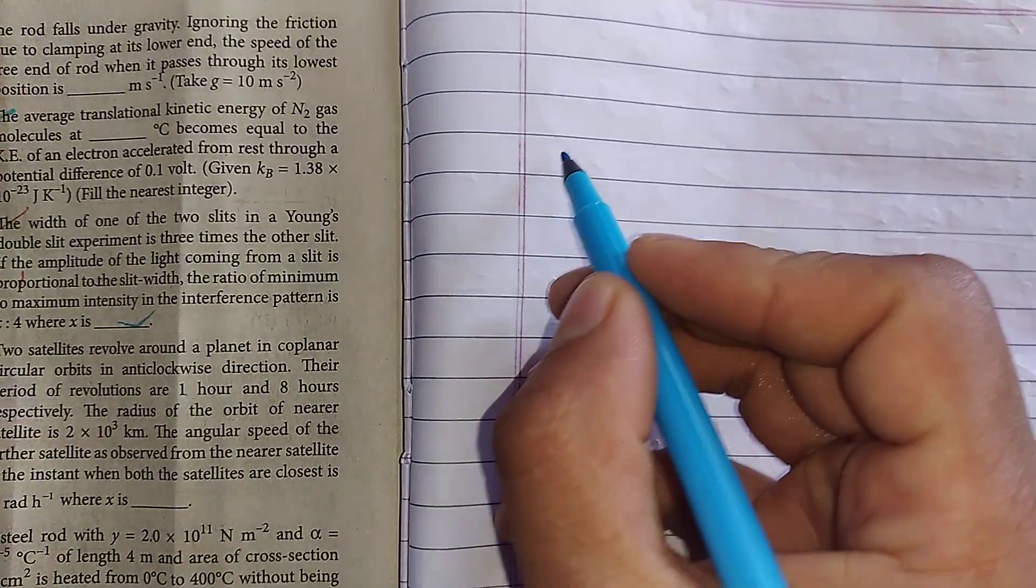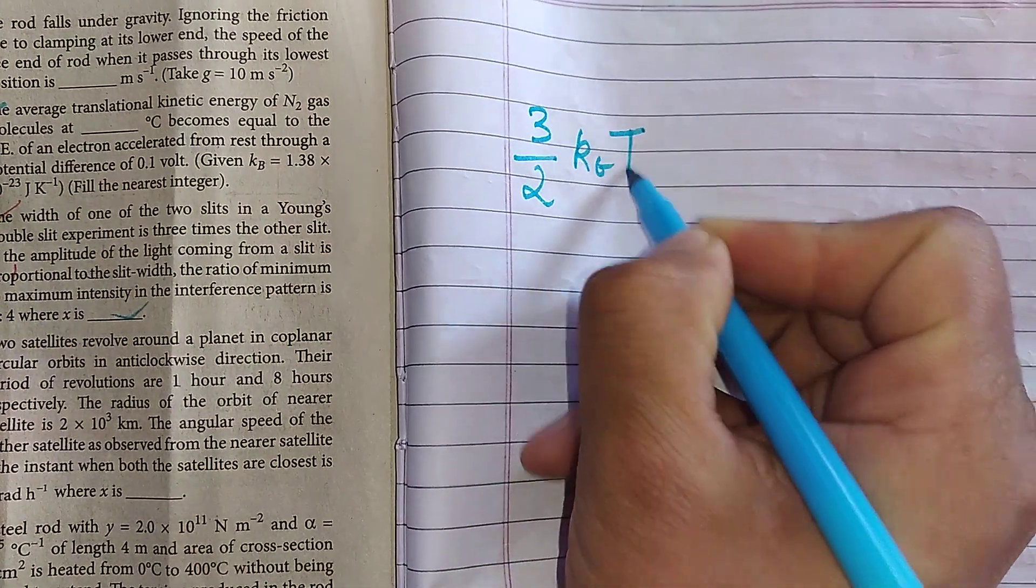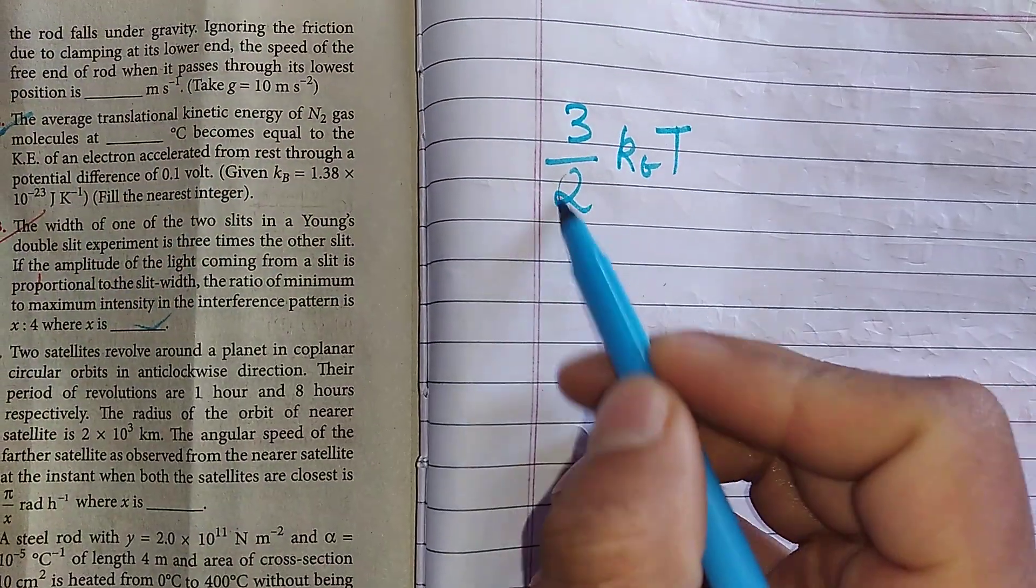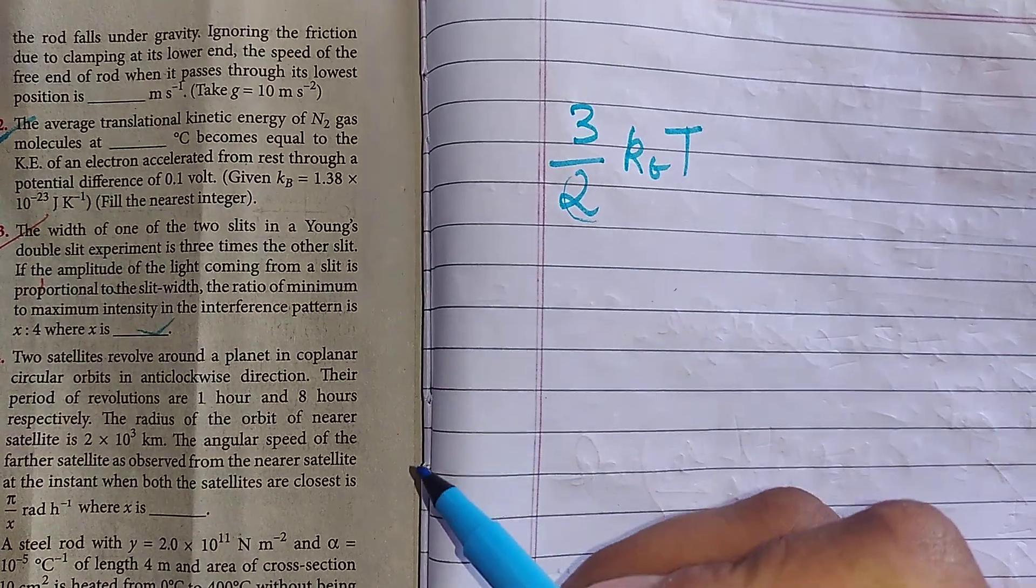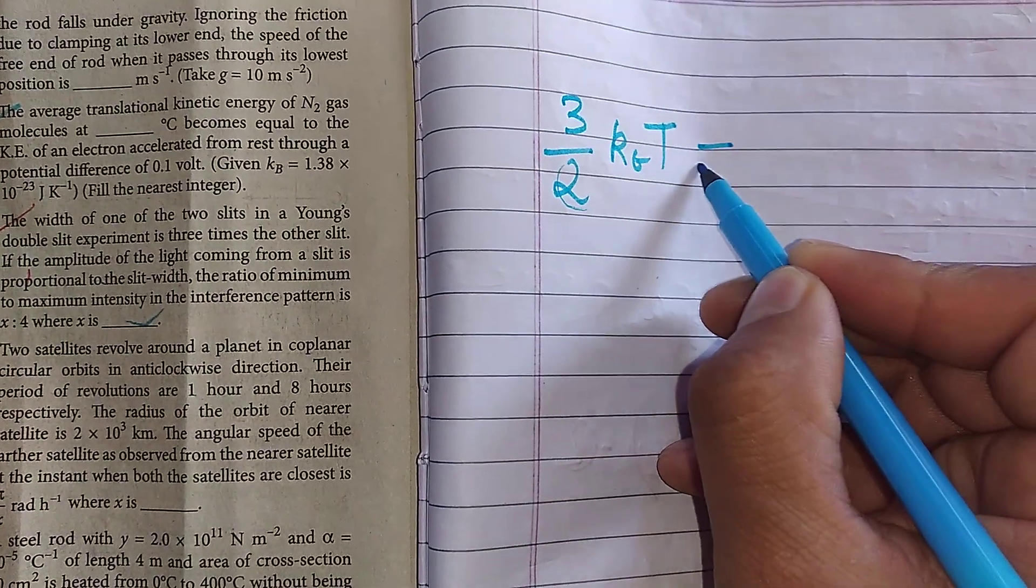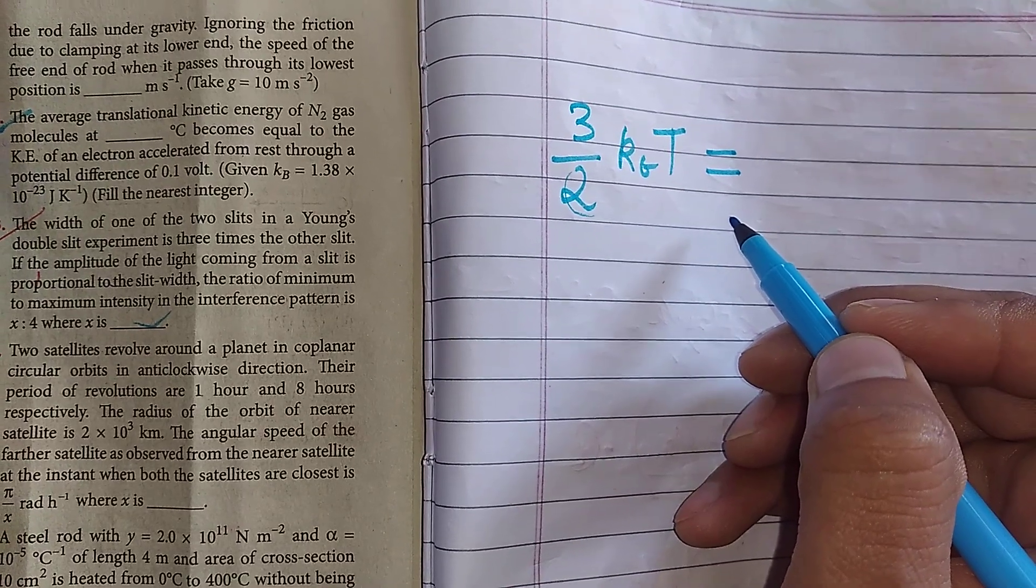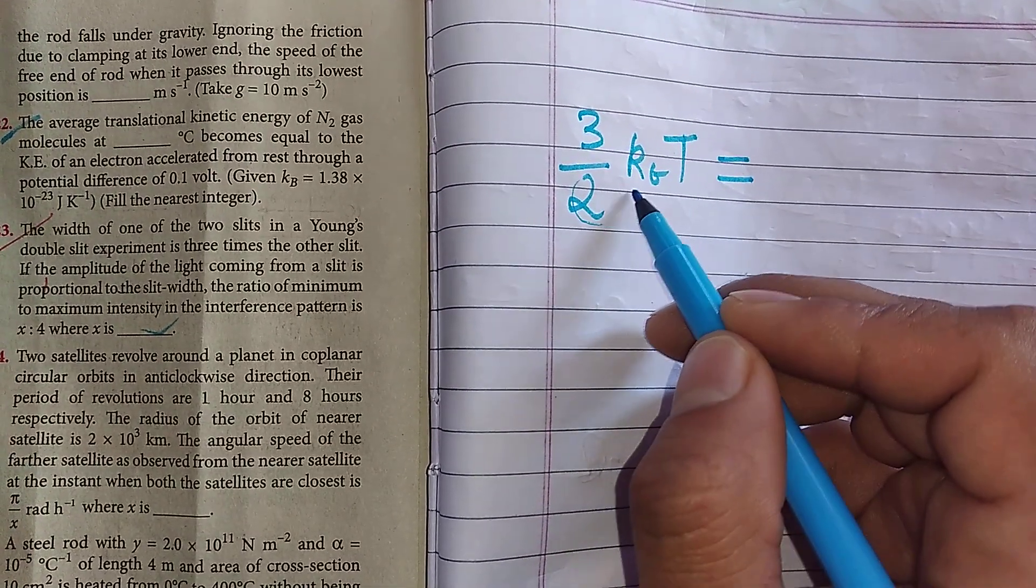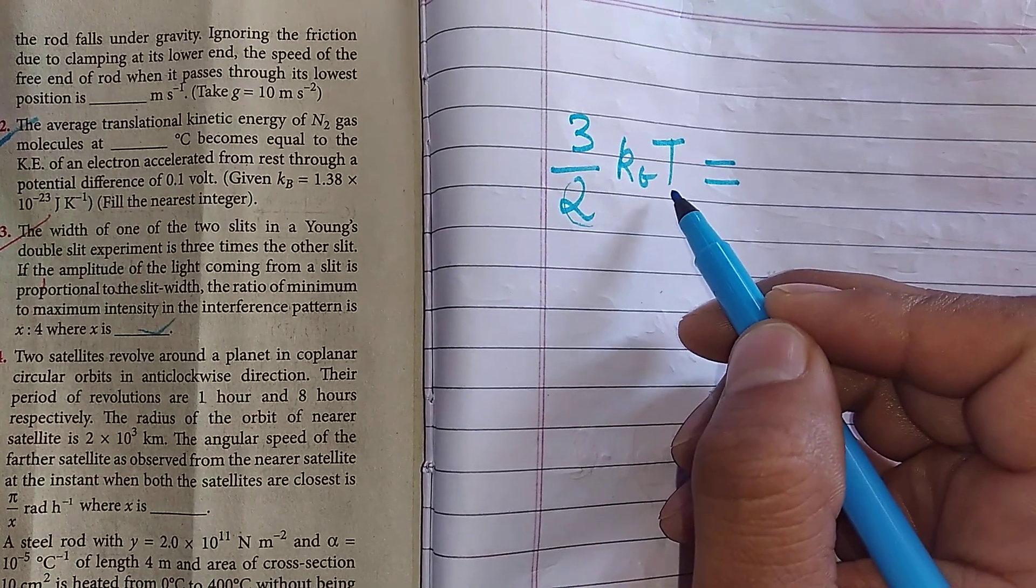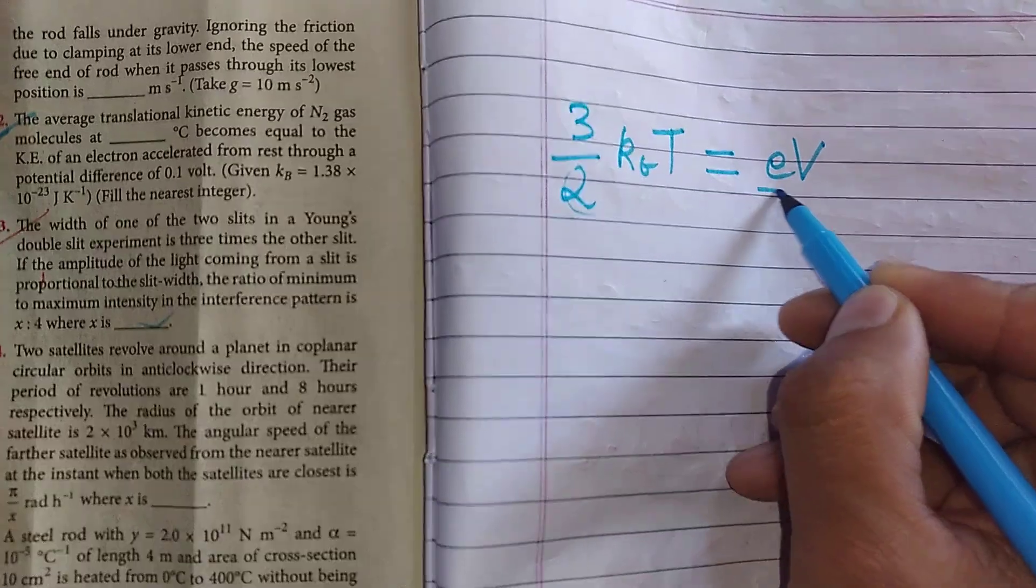The average kinetic energy is 3/2 kBT. So N2 gas molecules, the average translational kinetic energy is 3/2 kBT. And here in question condition, the average translational kinetic energy is basically equal to an electron's kinetic energy that is accelerated from rest through a potential difference of 0.1 volt. So an electron's kinetic energy is basically eV.